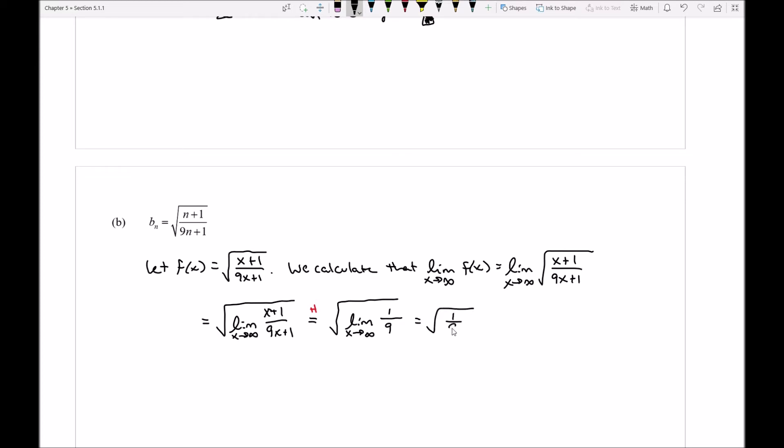Of course, then that limit is just 1 ninth and the square root of 1 ninth is just a third. So I can see here that the limit of f of x as x approaches infinity is equal to 1 third. And thus, the limit of b sub n as n approaches infinity is also equal to 1 third.